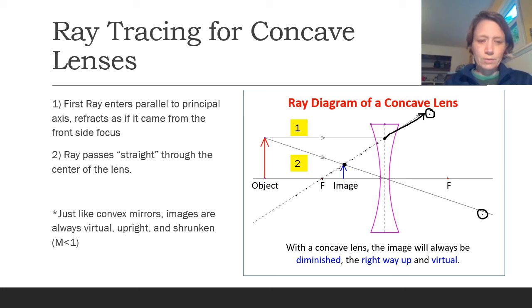Just like convex mirrors, images from concave lenses are always going to end up being virtual because it's diverging, the light spreading out. It's not actually coming together again. They're always going to be upright and they're always going to be shrunken with a magnification of less than one, like the image shown here.